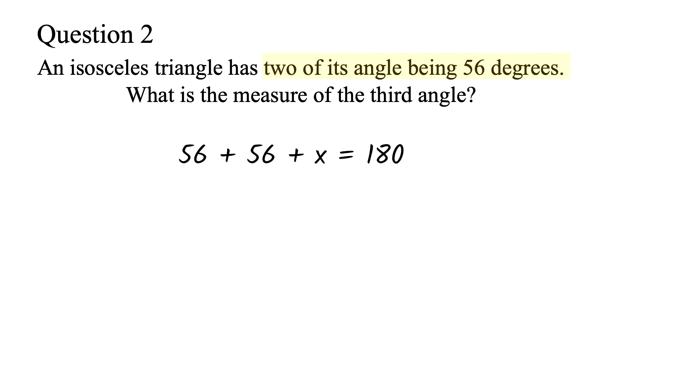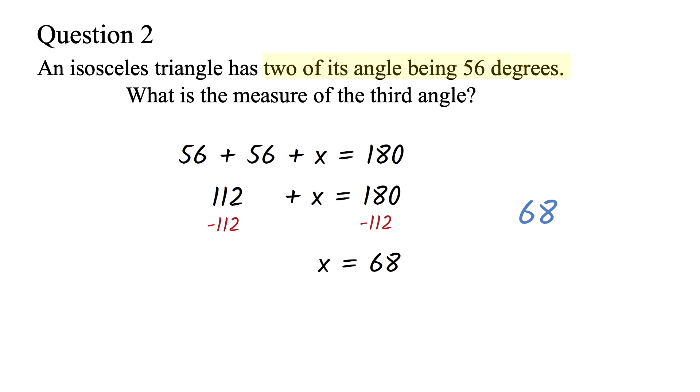Let's call the third angle X. This means that 56 plus 56 plus X equals 180. We solve for X. 56 plus 56 is 112. So we have 112 plus X equals 180. We solve for X. This is a one-step equation. Subtract 112 from both sides to get X equals 68. So the third angle is 68 degrees.